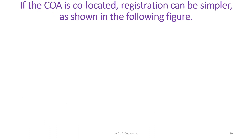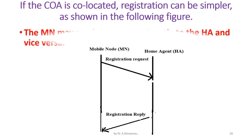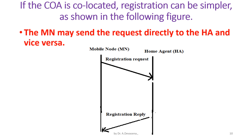If the care of address (COA) is co-located, registration can be simpler as shown in the following figure. The mobile node (MN) may send the request directly to the home agent and vice versa, as indicated in this diagram.